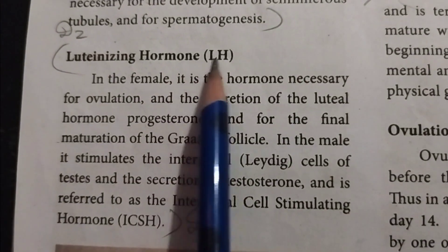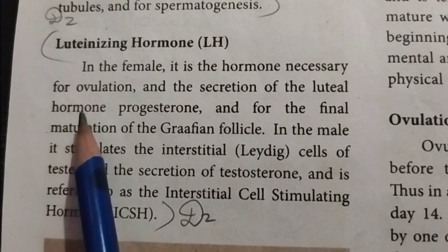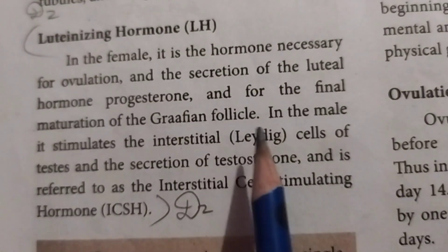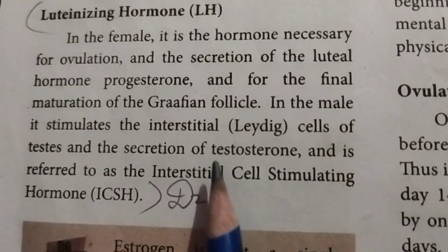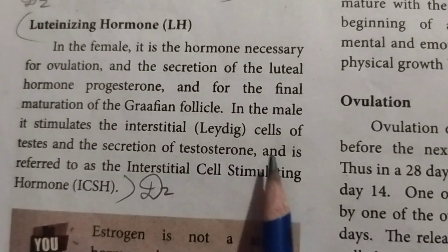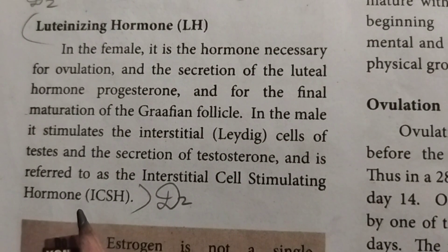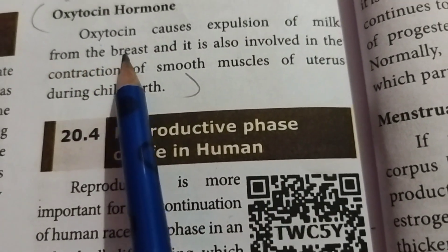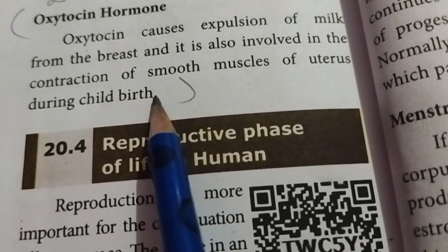Luteinizing Hormone (LH): In females, it is the hormone necessary for ovulation and the secretion of the luteal hormone progesterone, and for the final maturation of the Graafian follicle. In males, it stimulates the interstitial cells of the testes and the secretion of testosterone, and is referred to as the Interstitial Cell Stimulating Hormone (ICSH). Oxytocin hormone: Oxytocin causes expulsion of milk from the breast and is also involved in the contraction of smooth muscles of the uterus during childbirth. Up to this, second detailed answer.